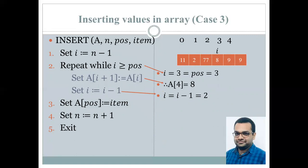So again, the statement is checked. While i is greater than or equal to position. Now you can clearly see that i is 3, which equals to the position. So the test is true. Therefore, the statements inside the loop are executed. A4 gets the value 8 and i is decremented.